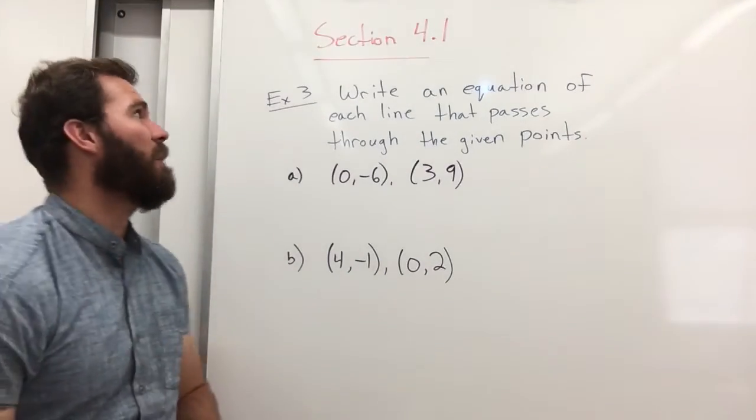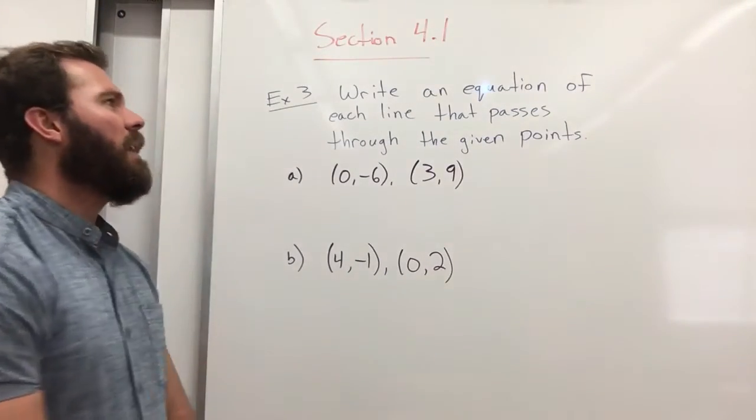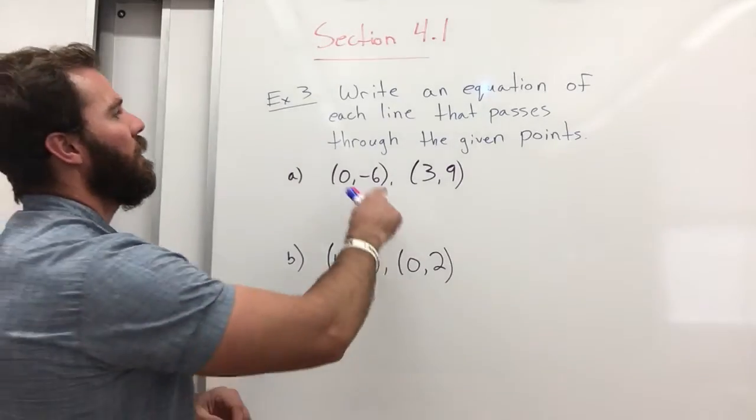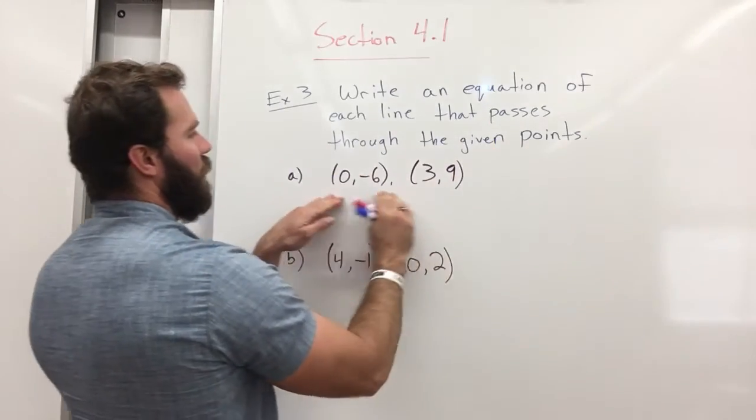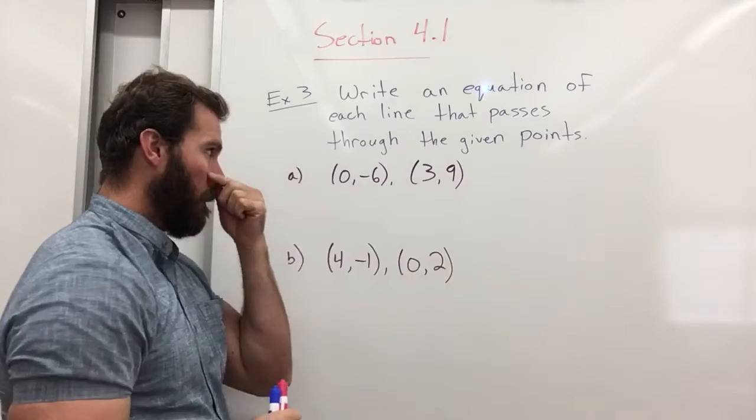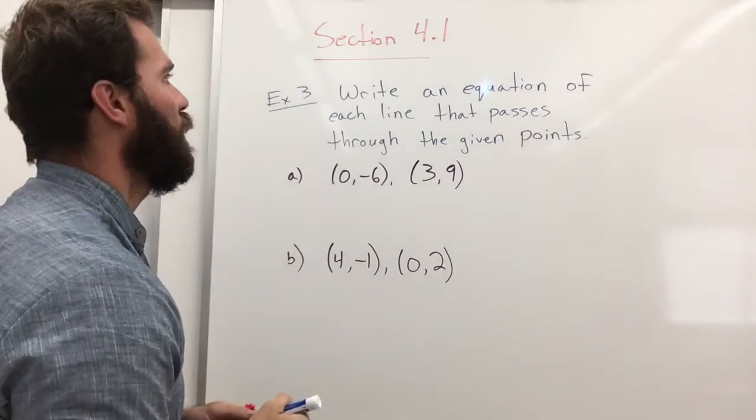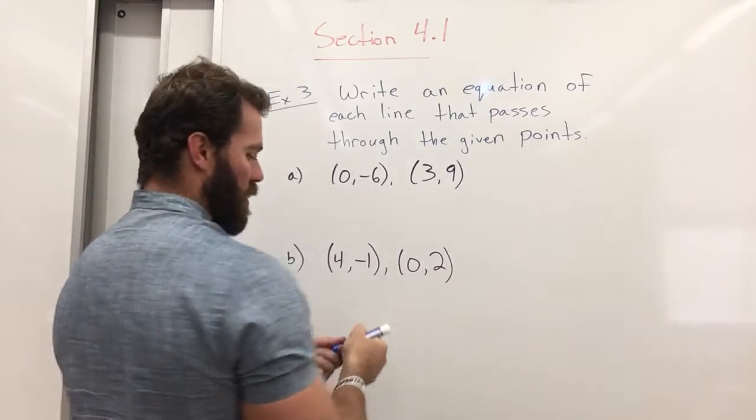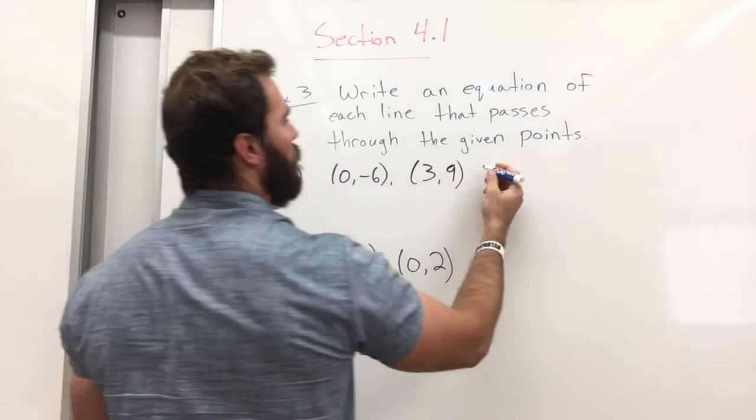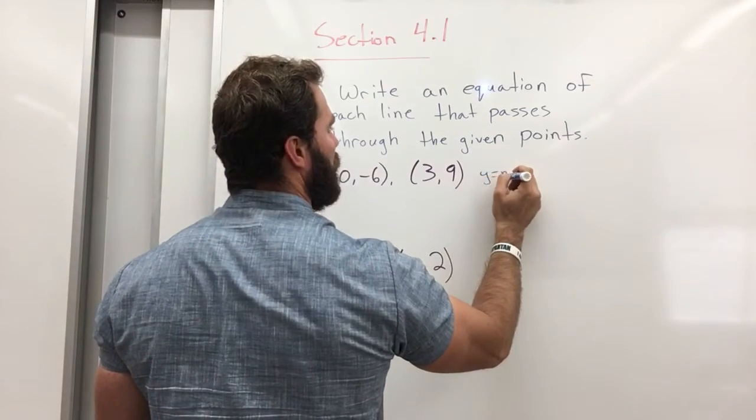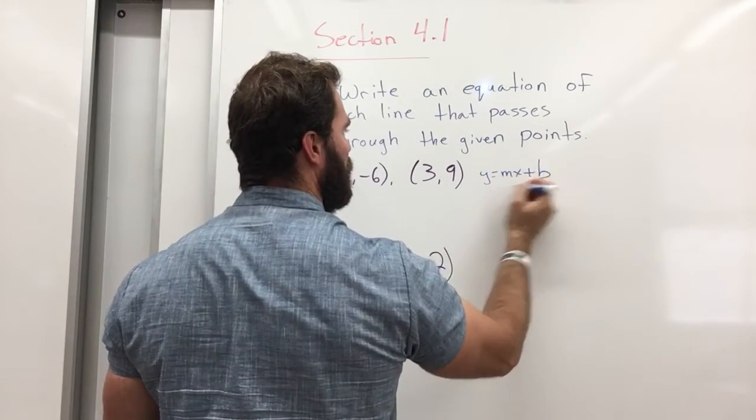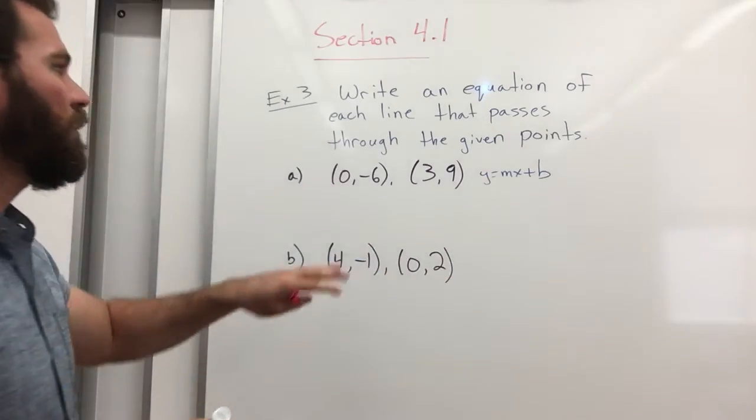Section 4.1, example 3. Write an equation of each line that passes through the given points. So we're giving two points and they want us to write an equation of the line. So we're looking for y equals mx plus b. That's the equation of the line we need to create.